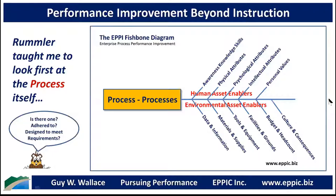If it's not the process — or the process is part of the problem but we don't want to jump on that from one symptom — we need to find root causes. The second thing Rumler taught me to look at are the environmental enablers. My model includes: data and information, materials and supplies, tools and equipment, facilities and grounds, budget and headcount, and culture and consequences. The Ishikawa four M's — men, materials, methods, machines — didn't cover all the things on the environmental side.